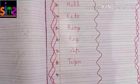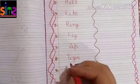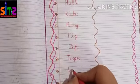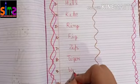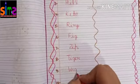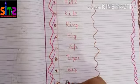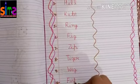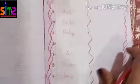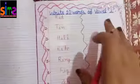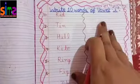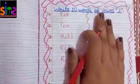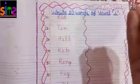On eighth number you all will write FISH. Like this, you all will write these ten words of vowel I here.